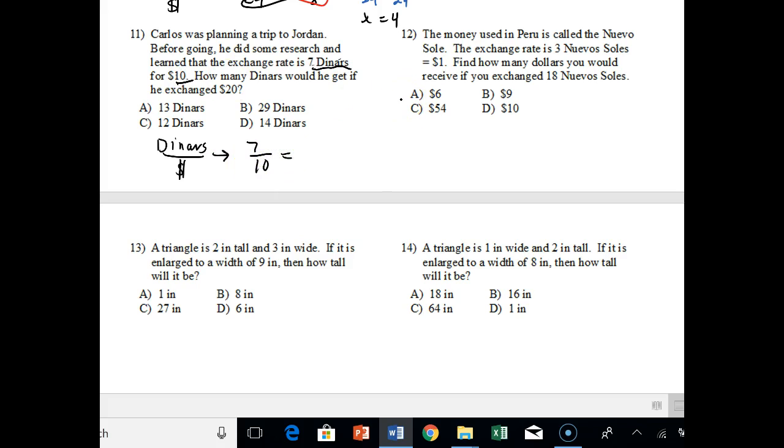And if we read the second sentence, it says, how many deniers would he get if he exchanged $20? So again, $20, dollars, dollars on bottom. So 20 on the bottom. So we'll have 10x equals 7 times 20, right? So 10x equals 140. And we divide both sides by 10. These cancel out. And I get x is equal to 14. So he will get 14 deniers if he exchanges it for $20. I'd pause and try and do number 10 and 12 if I read.